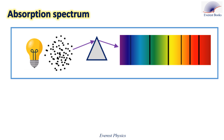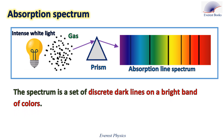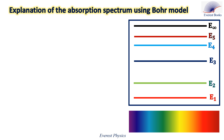Let's move to the absorption spectrum. In a dark room, we direct intense white light, which contains all the visible wavelengths, onto a gas — sodium vapor or hydrogen, for example. The light then falls on a prism, emerges separated, and falls on a screen. This spectrum is called the absorption spectrum. It is a set of discrete dark lines on a bright band of colors. These dark lines appear because the gas absorbs certain photons from the incident white light. Using the Bohr model, we can explain the existence of these dark lines.